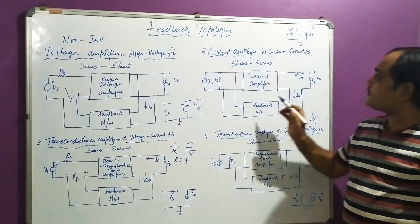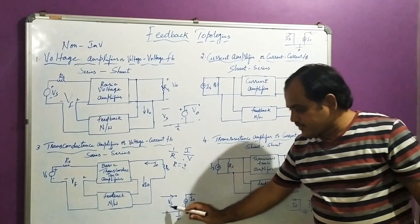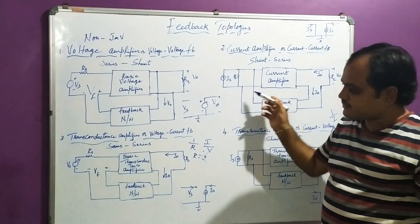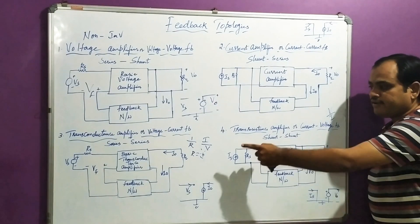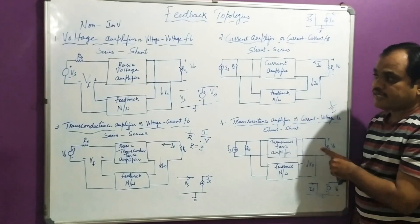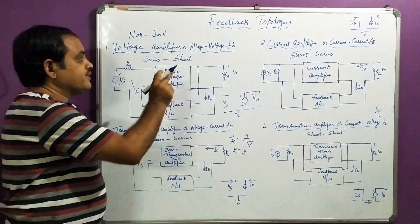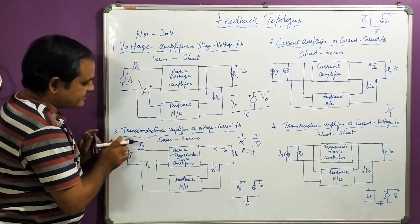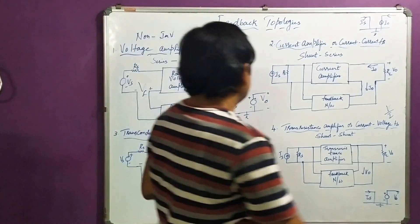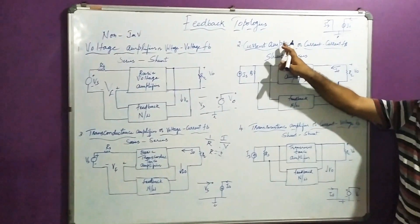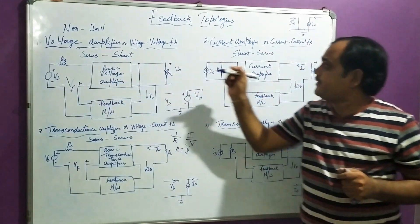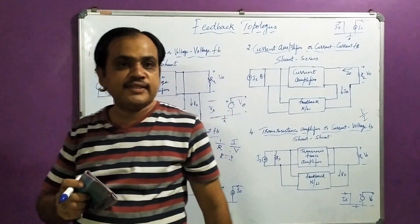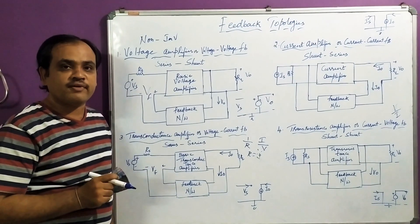So we have: voltage-controlled voltage source, current-controlled current source, voltage-controlled current source, and current-controlled voltage source. These four correspond to the four feedback topologies. The classification is purely based on two things: one is gain, and another is how the inputs are going to get connected. The four topologies are: series-shunt, shunt-series, series-series, and shunt-shunt. In the next session, we will discuss each topology in depth. Thank you.